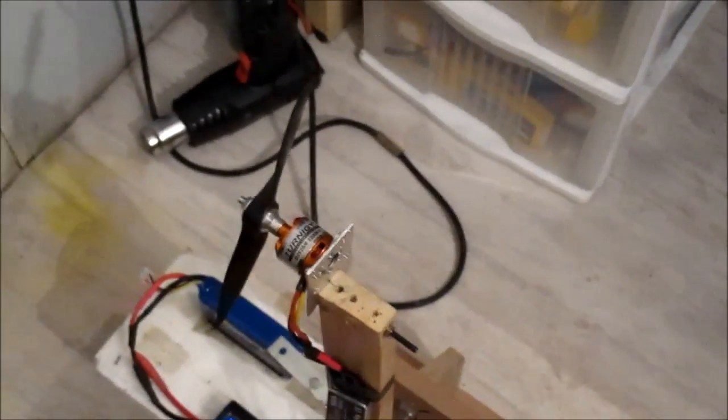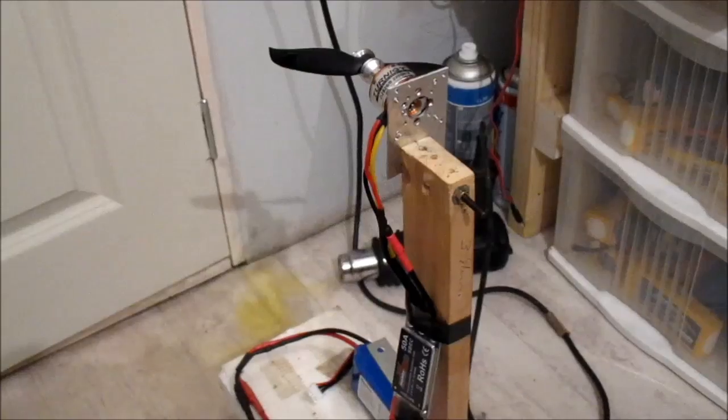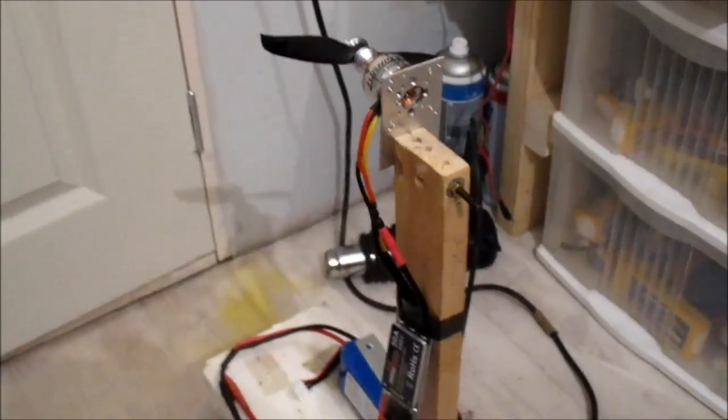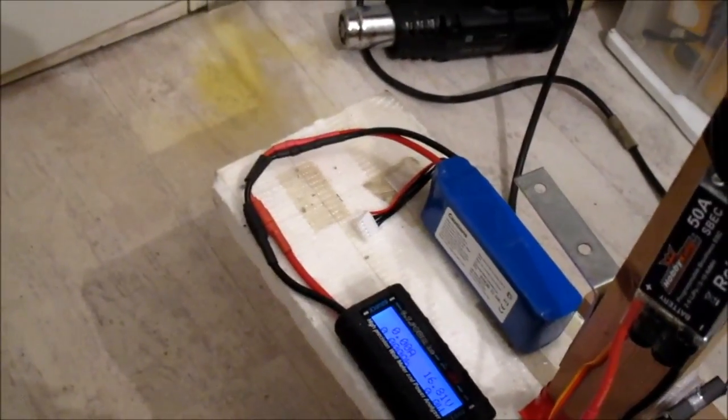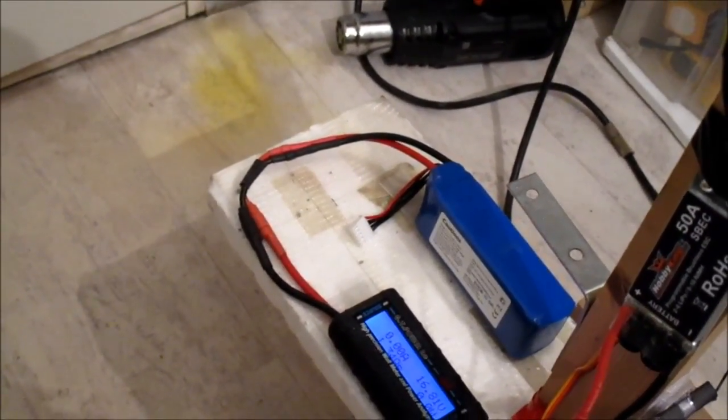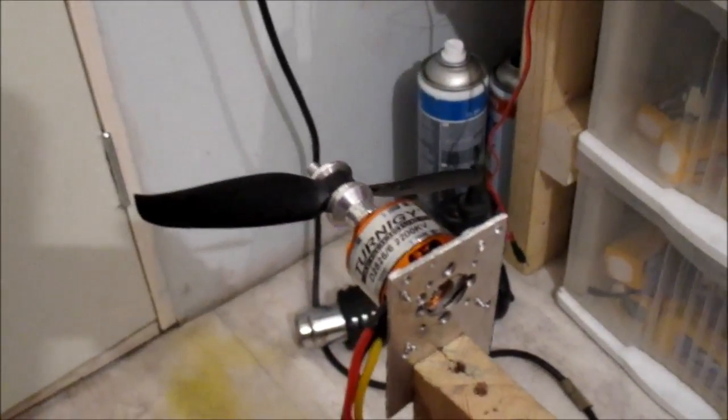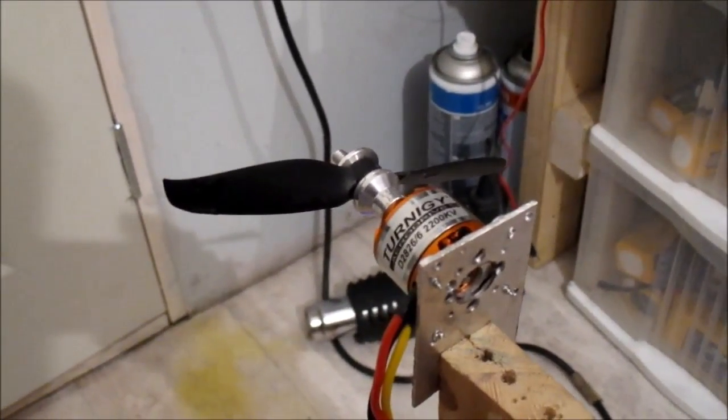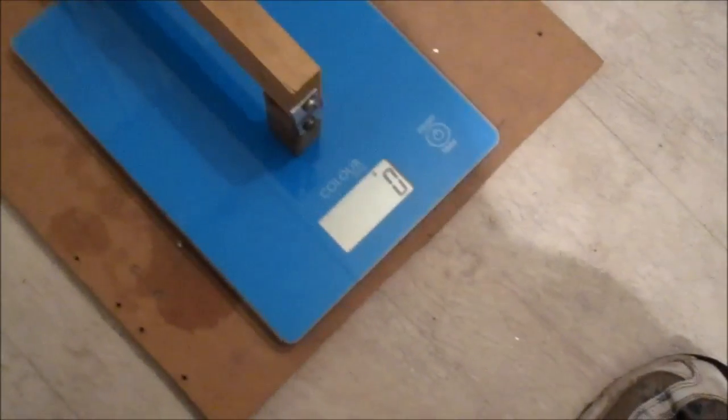Alright, now I have got the 4-cell on there, using one of my 35C 2200mAh Hyperion 4-cells. The first prop I am going to try is a 5x5 TGS prop. See what we get on the thrust on 4-cell.